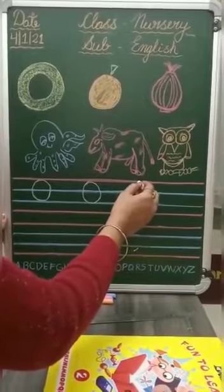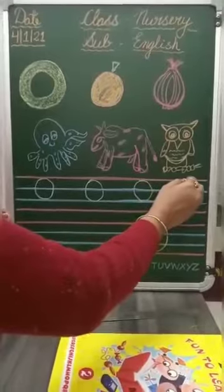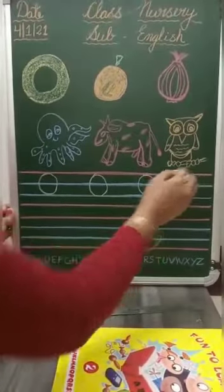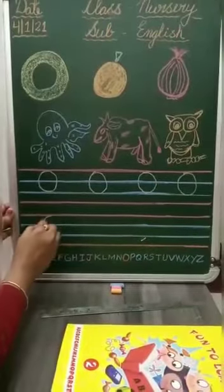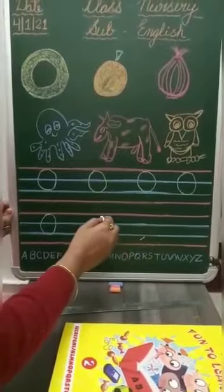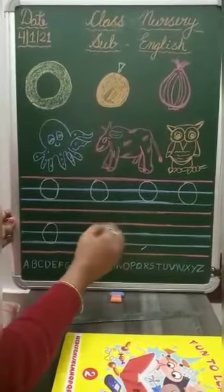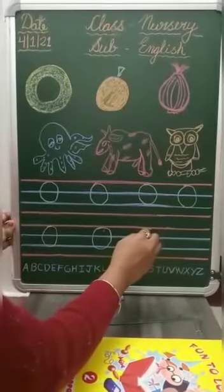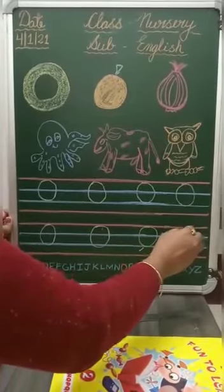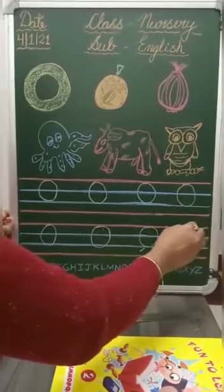Let's read the phonics. O for orange. O for onion. O for octopus. O for ox. O for owl. O for onion. Onion. O for octopus.